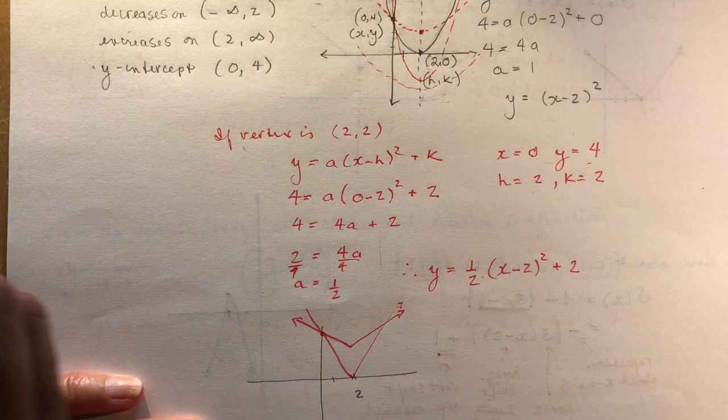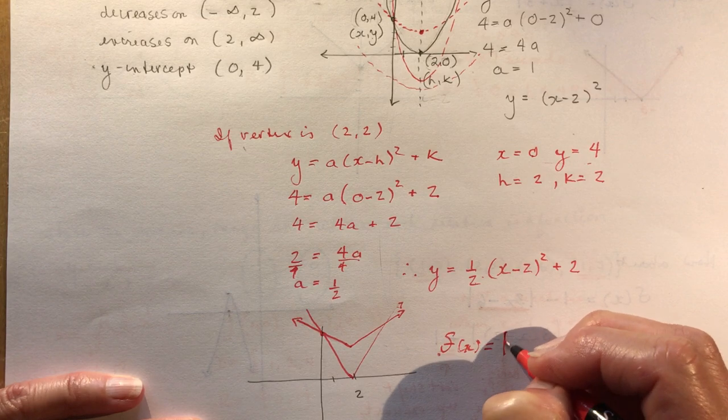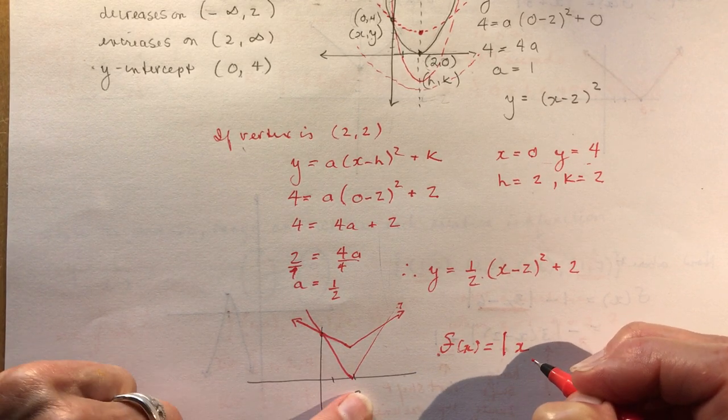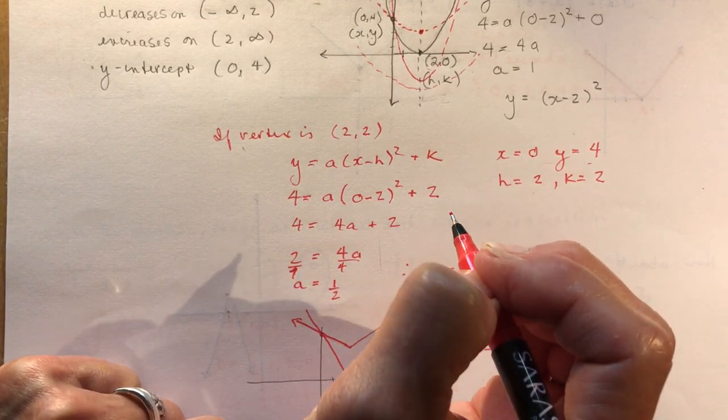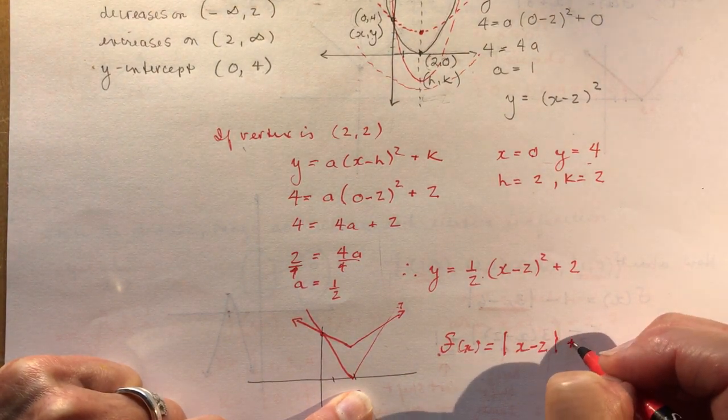For instance, we could have f(x) equals the absolute value of x. Now remember, we shifted it to the right, too. So it would have to be x minus 2. We could have that one.